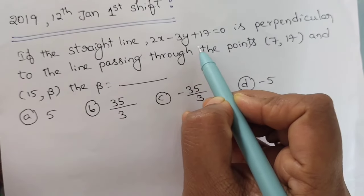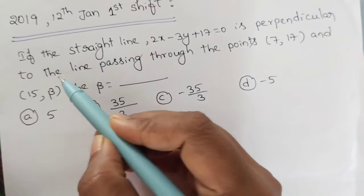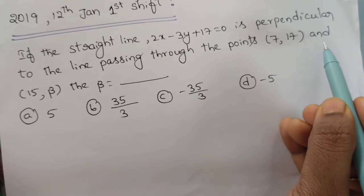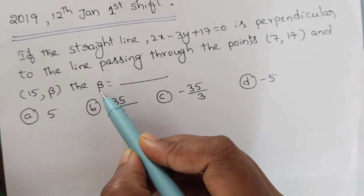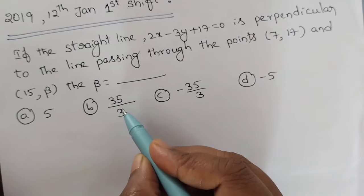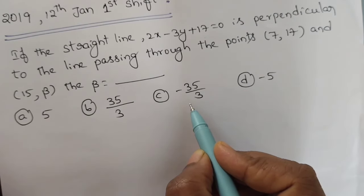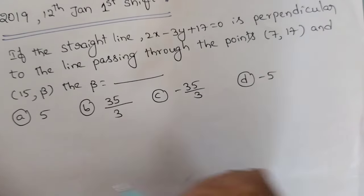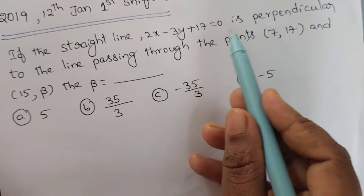The straight line 2x minus 3y plus 17 equals 0 is perpendicular to the line passing through the points (7, 17) and (15, beta). Find the value of beta. The given options are: option A is 5, B is 35/3, C is -35/3, and D is -5. Observe this line 2x minus 3y plus 17 equals 0.